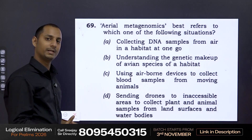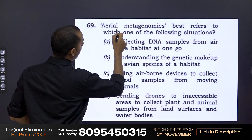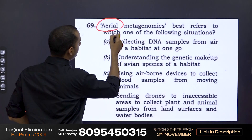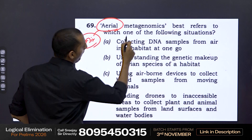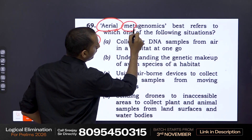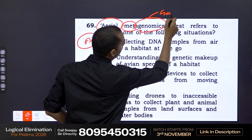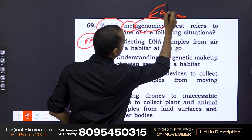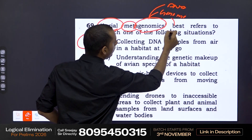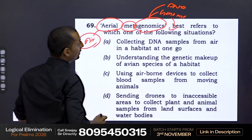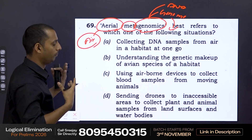Now moving on to the next question. What are we looking for? We are looking for some kind of 'aerial' — which can be related to air — and also some kind of 'genomics,' which can be related to genome, DNA, and all these. Now look for the option which has both DNA, genome, air, avian.